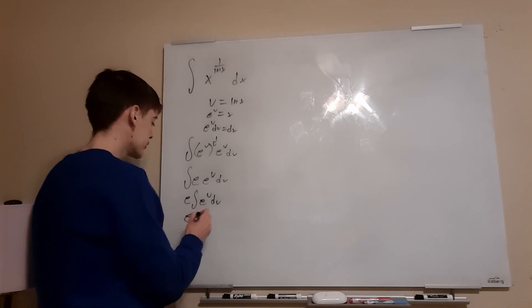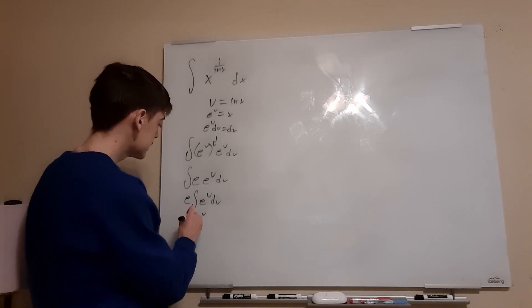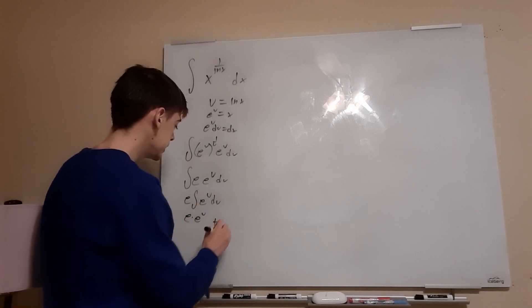Now this integral is really easy. The integral of e to the u is just going to be e to the u. So we'll be left with e times e to the u, and then have our plus c here.